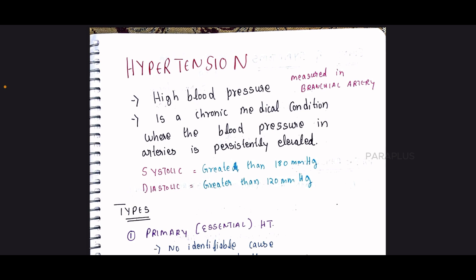So how is blood pressure defined? It involves the bronchial arteries. Hypertension is a chronic medical condition where the blood pressure in the arteries is persistently elevated — that is, gradually elevated. So it increases the blood pressure in the arteries, and it is a chronic condition, not sudden.